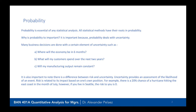Probability is essential for any statistical analysis, and all statistical methods have their roots in probability. Probability is important because it deals with uncertainty, and uncertainty is in every part of business. Many business decisions are made with a certain element of uncertainty, such as where will the economy be in six months, what will customers spend over the next two years, or whether manufacturing output will remain constant. It's important to note that there is a difference between risk and uncertainty.